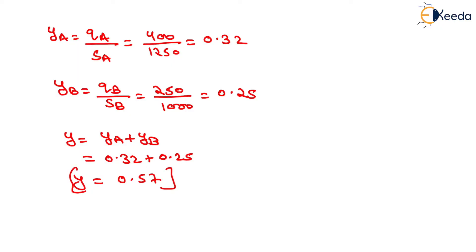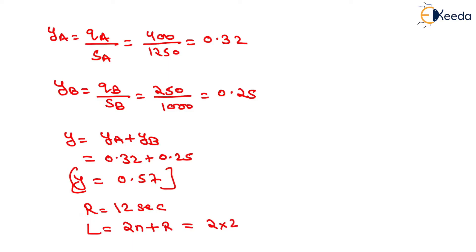We have the all-red time equal to 12 seconds. We can determine the value of L using the formula L equals 2N plus R. Here N is 2 (two phases), so L equals 2 times 2 plus 12, giving us L equal to 16 seconds.